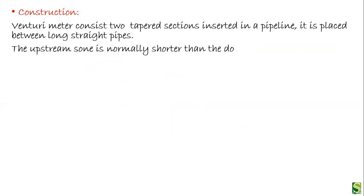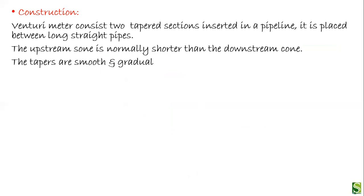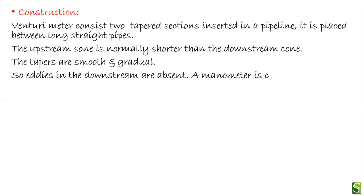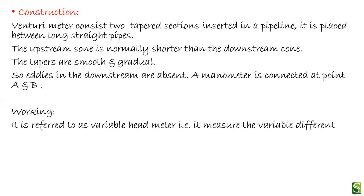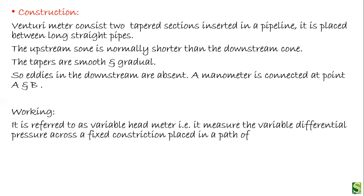The venturi meter is placed between long straight pipes. The upstream cone is normally shorter than the downstream cone. The tapers are smooth and gradual, and in the downstream section eddies are absent, so there are no sudden changes in the flow. A manometer is connected at points A and B. It works on the same principle as the orifice meter — it is also a variable head meter that measures the variable differential pressure across a fixed constriction placed in the path of flow.